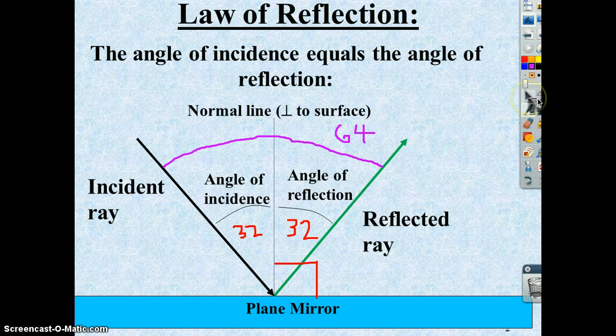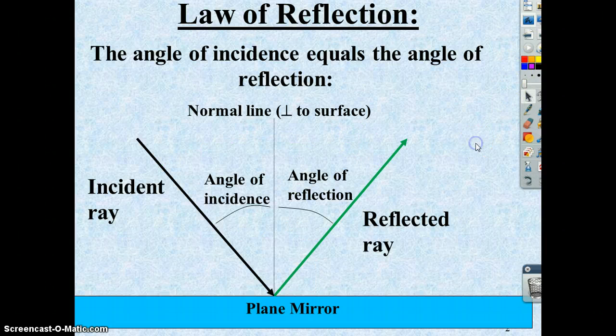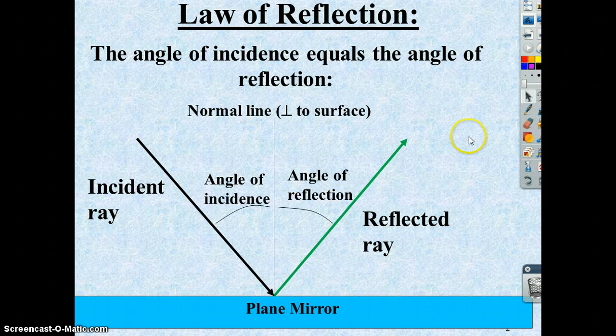So that's just a quick summary of how light bounces off a mirror edge, referred to as the law of reflection.